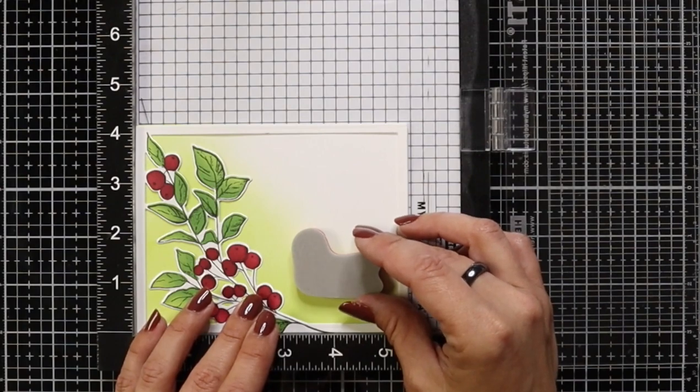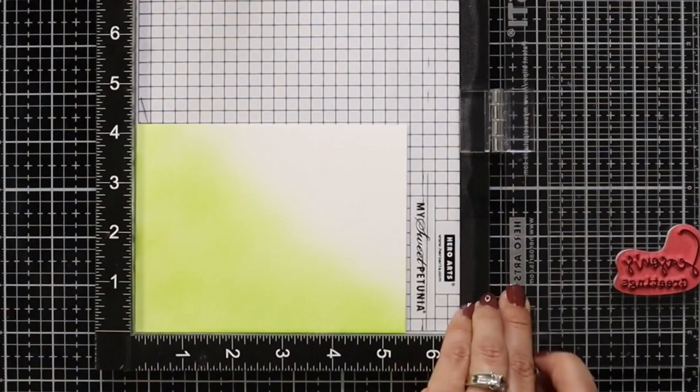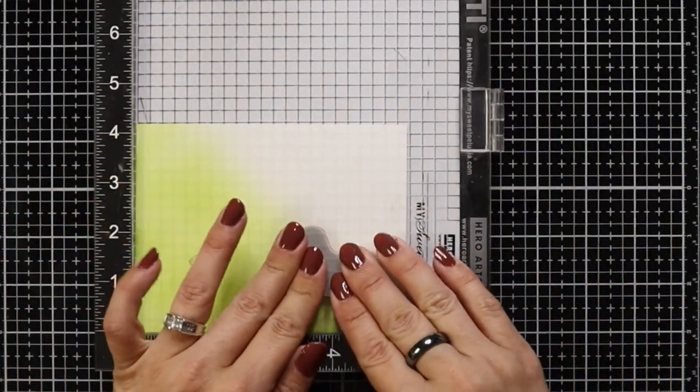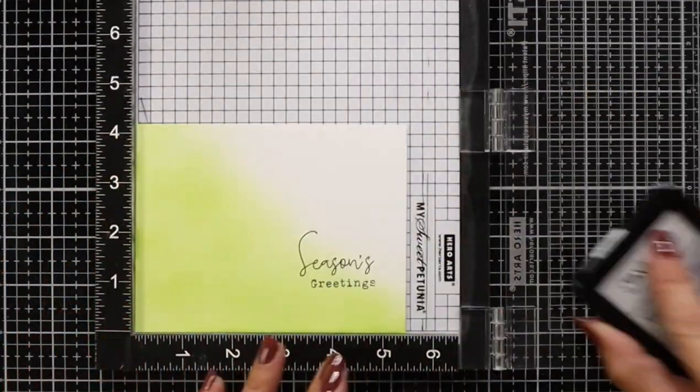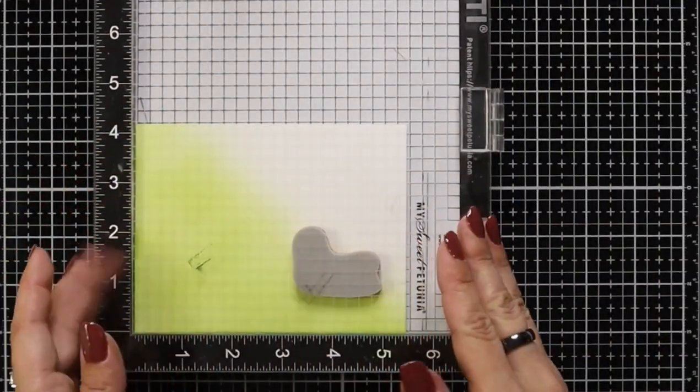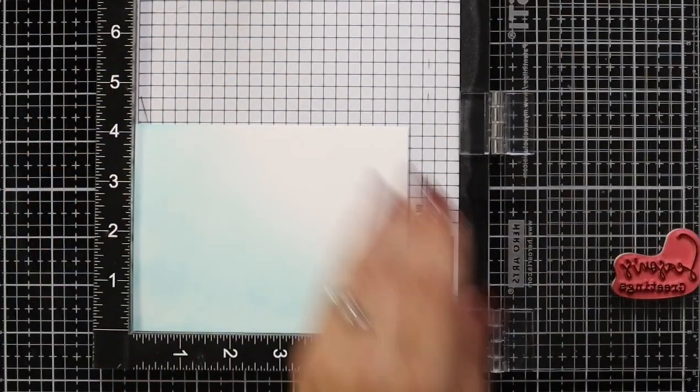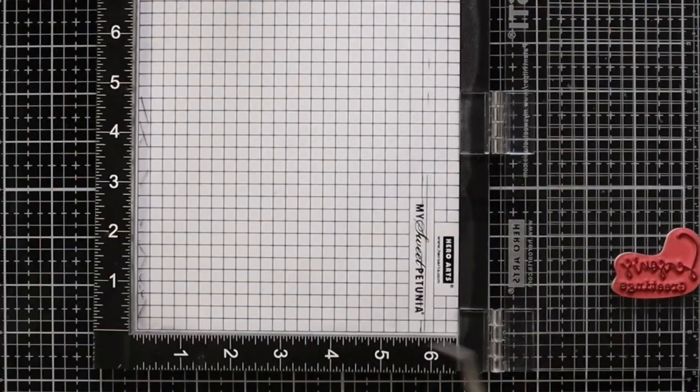And I'll do that with a variety of colors. So here on this one, I had used cilantro and I lined this up into my Misti tool to do stamping of the sentiment. Once I found the perfect placement, I stamped that in Oreo ink twice. And this was just like an assembly line. I just brought in all of my panels, stamped them and moved on to the next one.